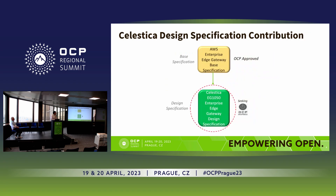Today we'll be going over two things. Yesterday, at the keynote sessions, there was a contribution from Amazon Web Services — AWS — on a device called an Enterprise Edge Gateway. They contributed the base specification, a very high-level directional description of what a product should look like for an Enterprise Edge Gateway. Today, Celestica is presenting our contribution, which is a design specification. We're seeking OCP-inspired status, and our design specification adheres to the base specification that AWS previously contributed to OCP.